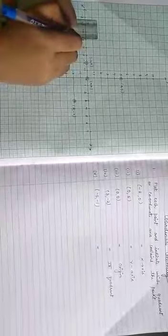And the last one is (-5, -1), in which x is negative and y is also negative. So, x is negative and y is also negative. So, this point is (-5, -1). So, this point lies in the third quadrant.